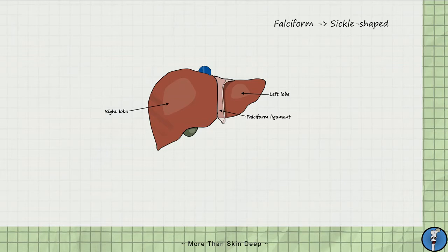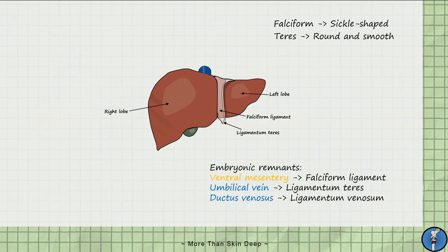The inferior portion of the falciform ligament ends in a thickened appendage known as the ligamentum teres. Teres denotes a round and smooth structure. Both ligaments are remnants of embryonic development, which no longer serve the same purpose in adulthood. Peeking out under the right lobe is the gallbladder, and exiting superiorly is the inferior vena cava.